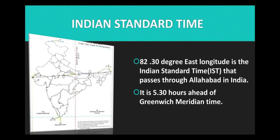Indian Standard Time. 82.30 degree East longitude is the Indian Standard Time, in short IST, that passes through Allahabad in India. It is 5:30 hours ahead of Greenwich Meridian Time.